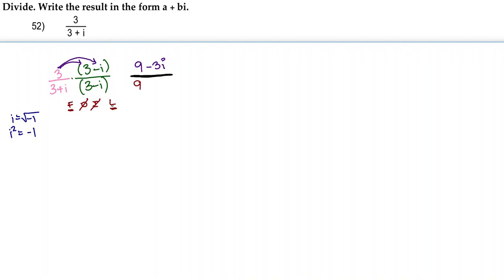And the last two terms are i and negative i. So, i times negative i gives us negative i squared. And we know by definition that i squared equals negative 1, so we can just replace this with negative 1. So, let's rewrite that as 9 minus negative 1.